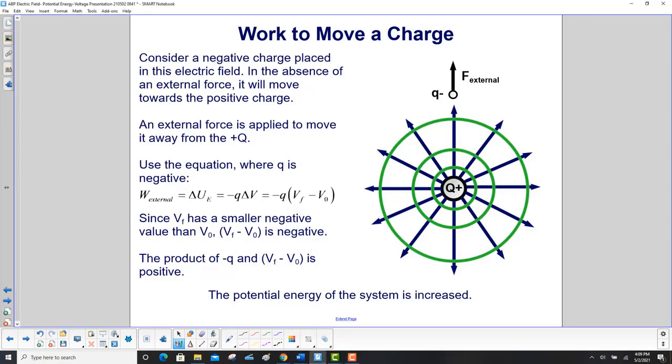Consider a negative charge placed in this electric field. In the absence of an external force, it will move towards the positive charge and the potential energy of the system will decrease. An external force is applied to move it away from plus Q. Use the equation where Q is negative. So the work external equals minus Q delta V, minus Q VF minus V0.